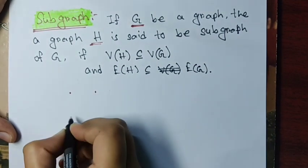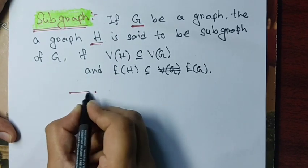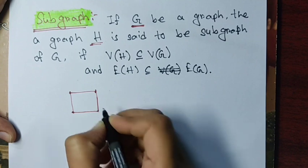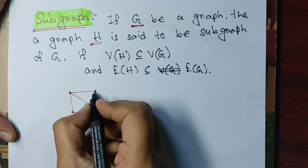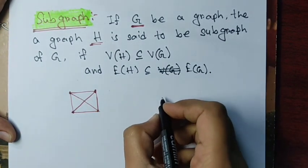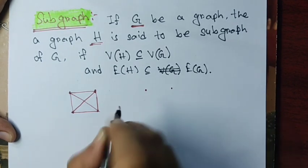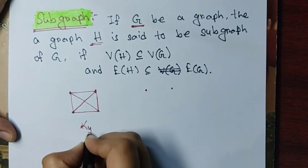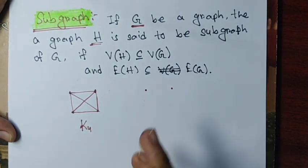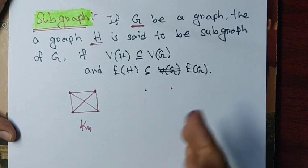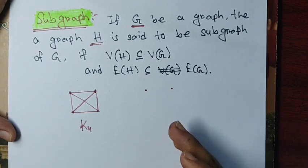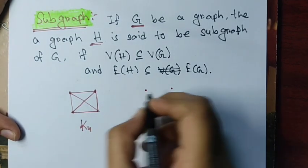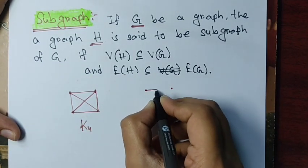Firstly let us consider a complete graph on four vertices. This graph is K4. We will see some subgraphs of this graph. We have already discussed about complete graphs on n vertices in the previous lecture — you may check that out.